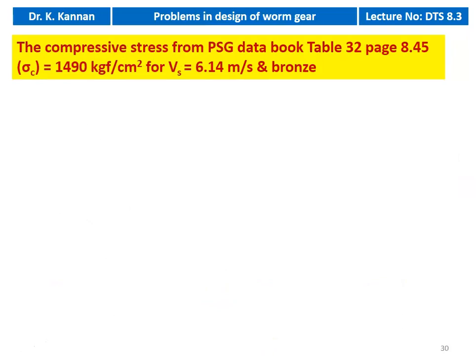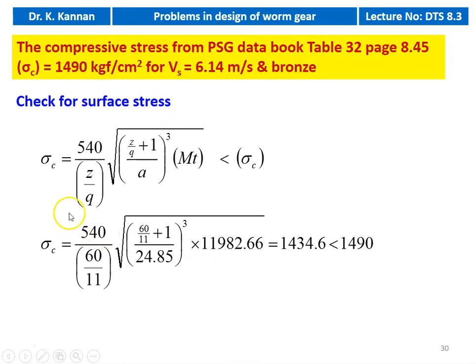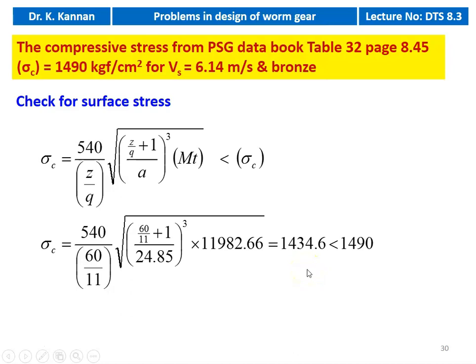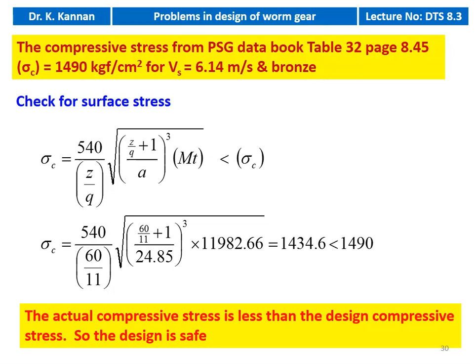Then the design compressive stress. For V = 6.14 m/s and bronze material, from table 32, the design surface stress sigma_c = 1490 kgf/cm². We check for the design surface stress: sigma_c = 540 / (Z/Q) × sqrt[(Z/Q + 1)/A]³ × MT_design = 540 / (60/11) × sqrt[(60/11 + 1) / 24.85]³ × 11,982.66 = 1434.6 kgf/cm², which is less than 1490 kgf/cm². The actual compressive stress is less than the design compressive stress. The design is safe.